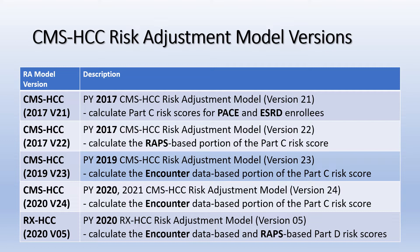CMS will continue to calculate the RAPS-based risk score with the 2017 CMS-HCC Model V22, using diagnoses from RAPS and FFS. For ESRD non-PACE risk scores for Payment Year 2021, CMS will use the 2020 ESRD model to calculate risk scores with diagnoses from encounter data, RAPS inpatient data, and FFS. CMS will use the 2019 ESRD model to calculate risk scores using diagnoses from RAPS and FFS.